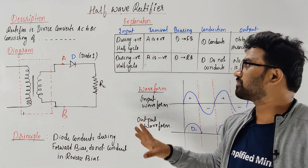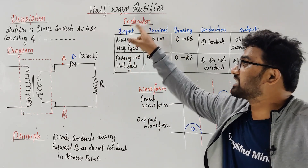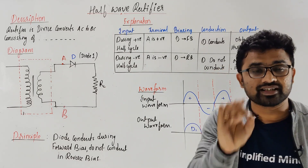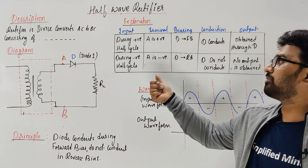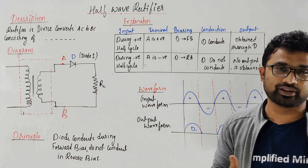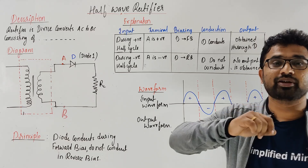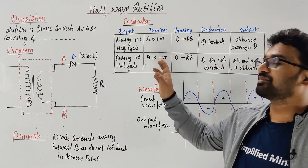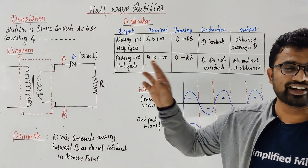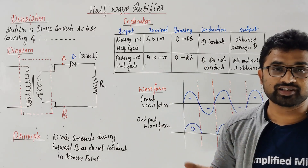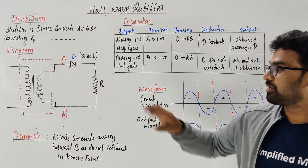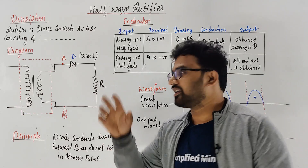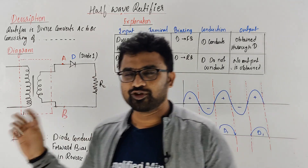For your answer: write the description, then the diagram, then the principle, and please explain this in sentences. Write sentences to explain, and also include the table column so it becomes easy for the reader. Just by seeing the diagram and the table column, the person correcting can say the student has understood and give full marks. Please write some sentences, then write the input and output waveform. You will get full marks if you write in this way.